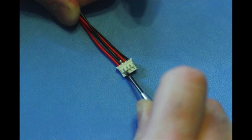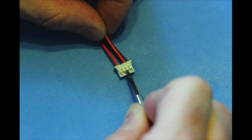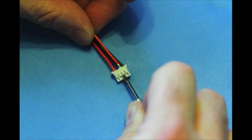Simply take a small flat blade screwdriver and gently pry up the retaining feature and gently pull out the wire and connector. Gently is the key word here.